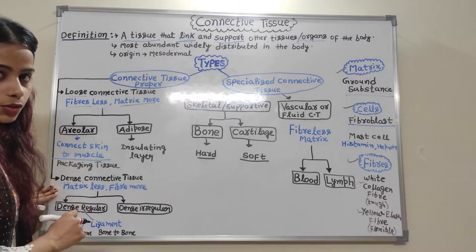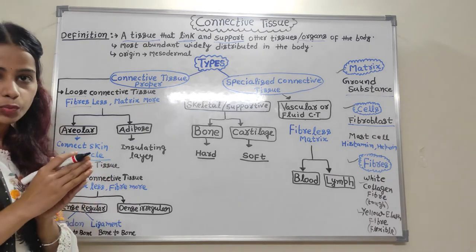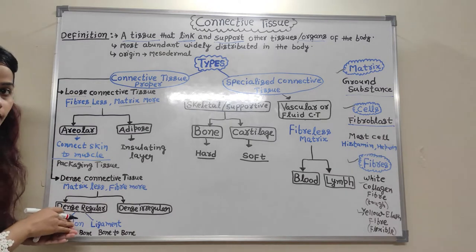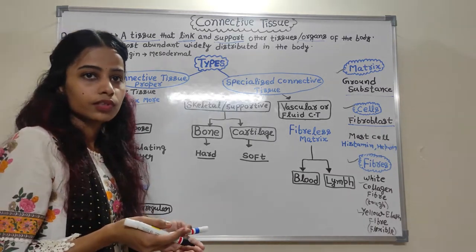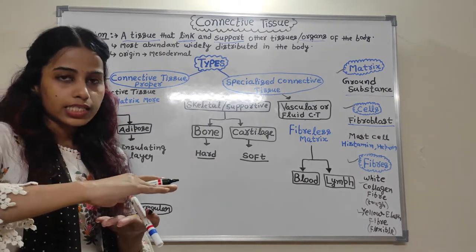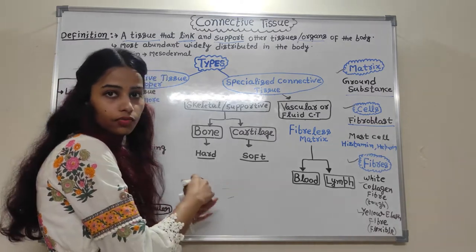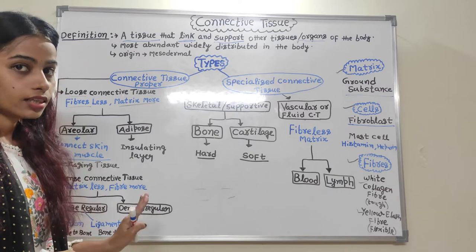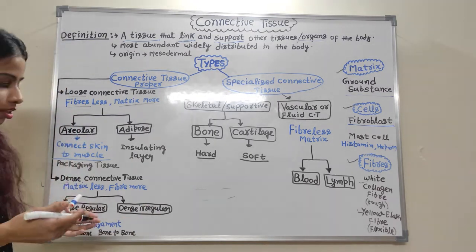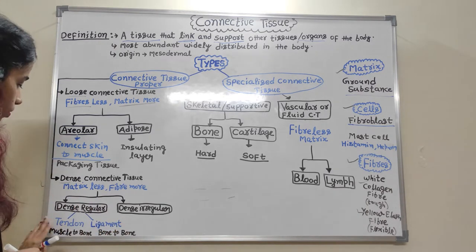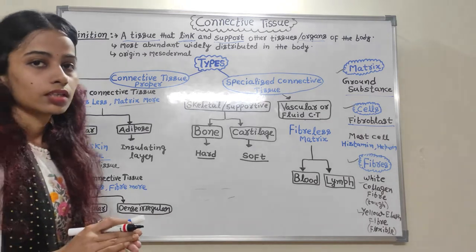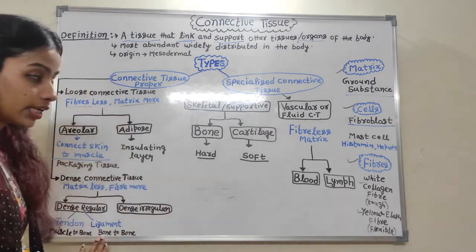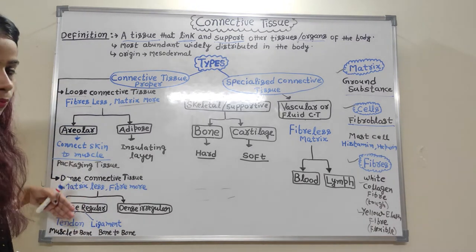The second type of Connective Tissue Proper is Dense Connective Tissue, where fibers are more and matrix is less. It is divided into Dense Regular and Dense Irregular. In Dense Regular, fibers are arranged in a parallel manner, whereas in Dense Irregular, fibers are arranged irregularly. Dense Regular is further divided into Tendon, which connects muscle to bone, and Ligament, which connects bone to bone.